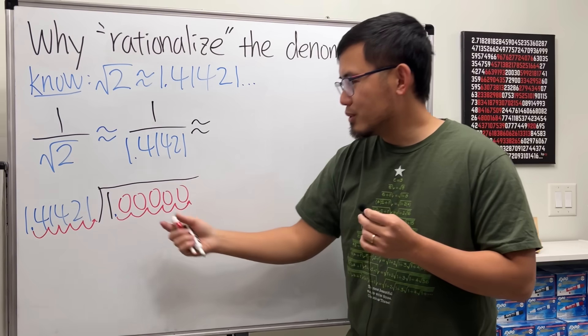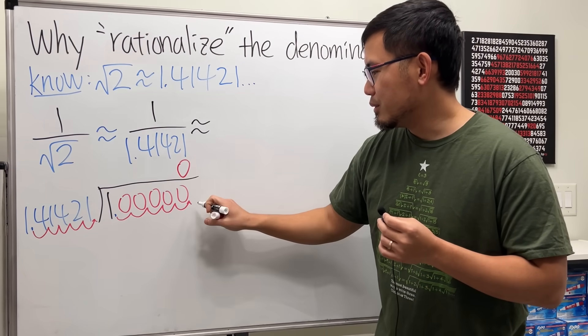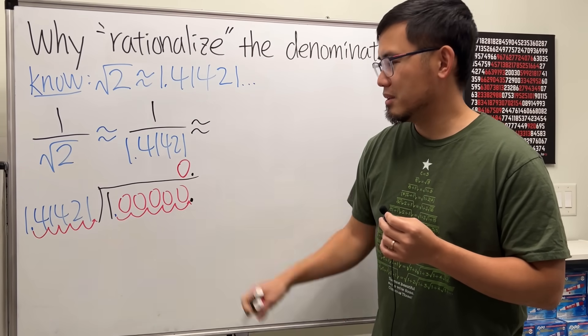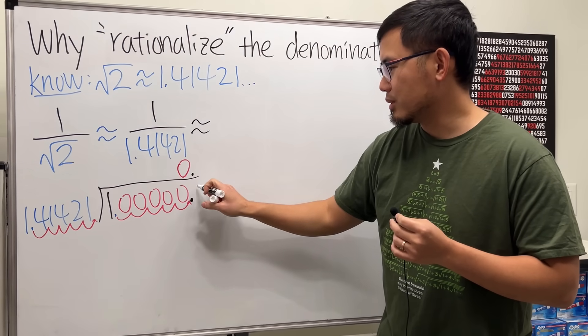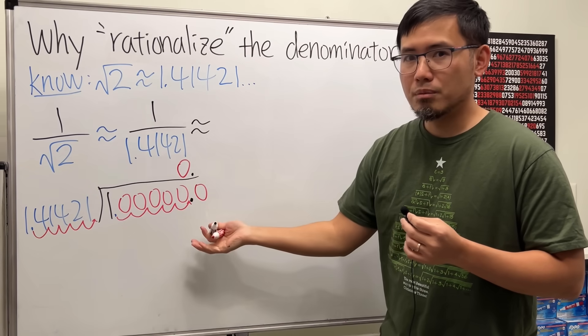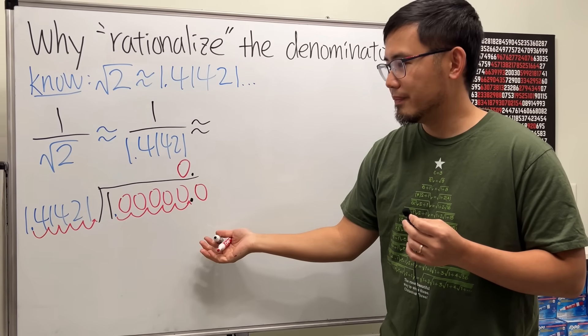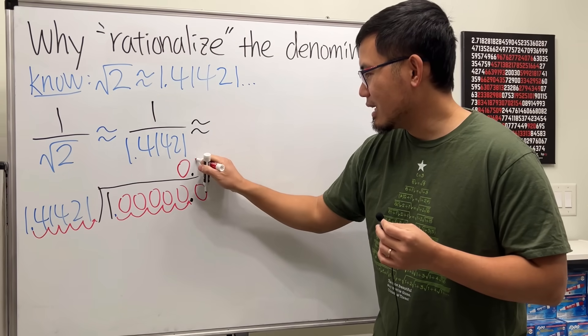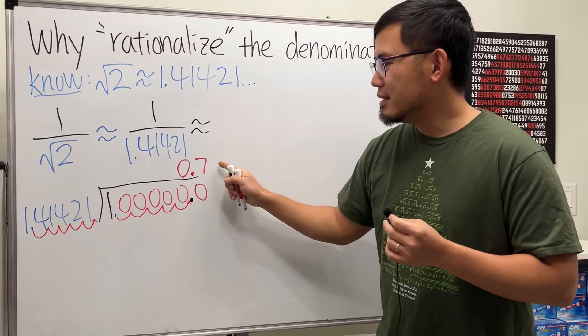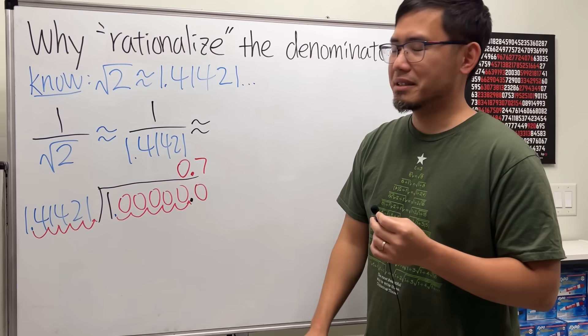This goes into 100,000 zero times, and then you start to put a decimal point here. Then this goes into this how many times? Well, how many times can you do that in your head? Six, seven? The answer is seven. Seven times that... oh my god.